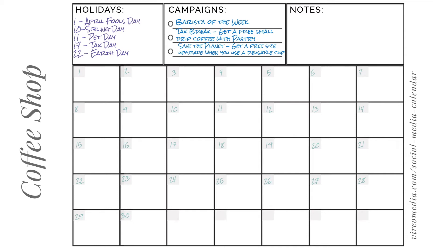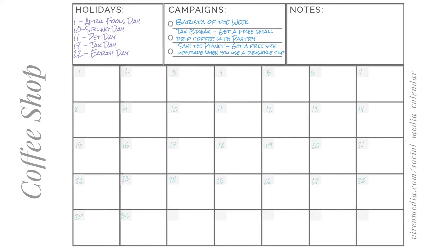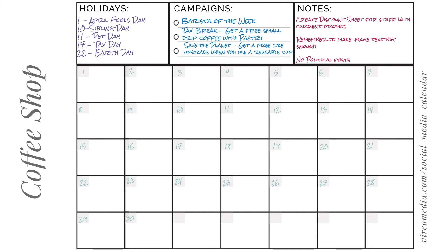We left off by adding our campaigns for the month. The next thing I usually do is add any notes I'll need for the upcoming month. My notes are usually a mix of logistics I need to keep in mind in order to make my social media strategy work, budget information, and any notes from the previous month.